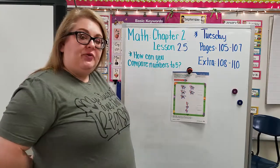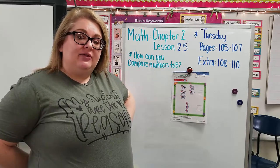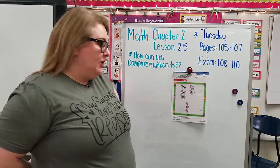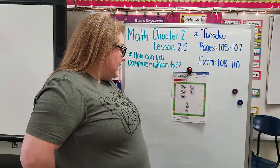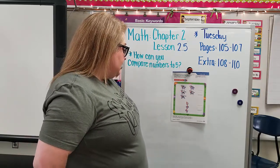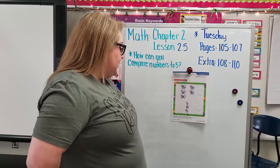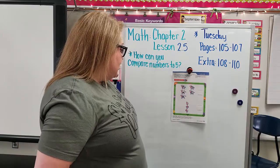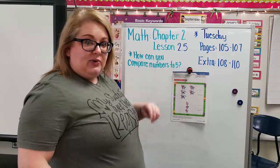We're going to be looking for the amount of the different objects and then we're going to compare those two groups. So the first one it says: look at the sets of objects, count how many objects in each group, each set, write the number, compare the numbers, and tell a friend which number is greater, which one is less.